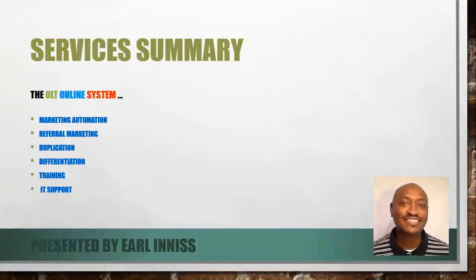So when you get started with us today, you get access to the following: marketing automation — know the tools we are using to auto-reply and auto-post, plus get assistance setting up your Facebook advertisement to generate results like our existing clients. A system with the following at its core: automated referral marketing to build your business virally by leveraging your leads to generate additional leads; true duplication by leveraging your sales team, OLT paid members, and free affiliates to grow your business exponentially; and differentiation — get the education, training, and IT support to set you apart from your competition. All this is a whopping $700 value.